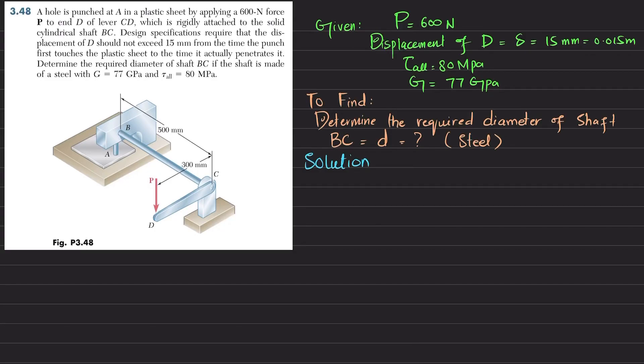Welcome back to problem 3.48. The statement is: a hole is punched at point A in a plastic sheet by applying a 600 newton force P to the end E of lever CD, which is rigidly attached to a solid cylindrical sharp BC. Design specification requires that displacement of D should not exceed 15 millimeters from the time the punch first touches the plastic sheet to the time it actually penetrates it.